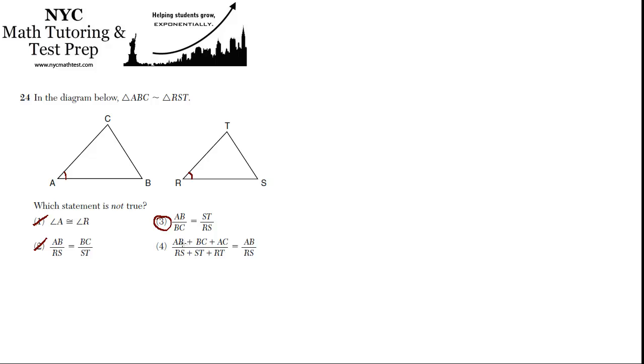And let's just check option 4 for completeness. AB plus BC plus AC - that's the perimeter of all the sides of triangle ABC - is being put over RS plus ST plus RT, which is the perimeter of the second triangle. So the perimeter of this one over the perimeter of that one equals AB to RS. That's going to be true, because the perimeter of the first triangle compared to the perimeter of the second triangle is equal in proportion to the length of any one side of the first triangle as compared with the corresponding side in the second triangle. So that's certainly true. Option 3 is the best choice.